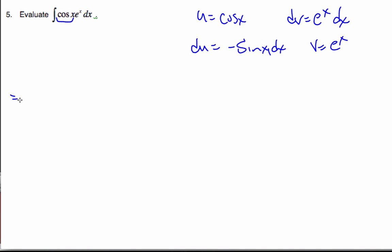Using my formula, I plug in, I want u, which is cosine x e to the x minus the integral of v, e to the x times negative sine x dx.